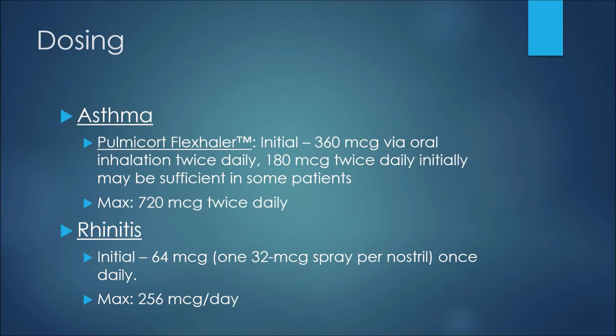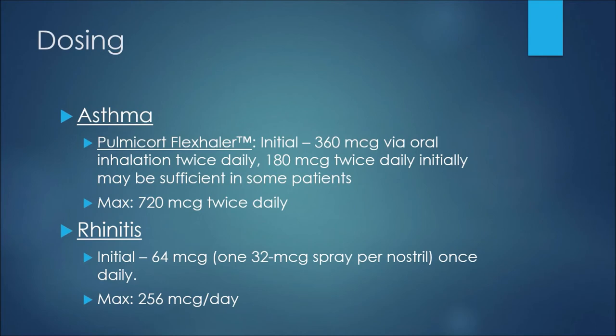For some examples of dosing with Budesonide: on the treatment of asthma using the Pulmicort Flexhaler, we may see an initial dose of 360 micrograms via oral inhalation twice daily. 180 micrograms twice daily initially may be sufficient in some patients. The maximum dose would be 720 micrograms twice daily.